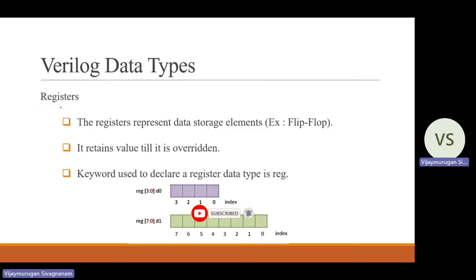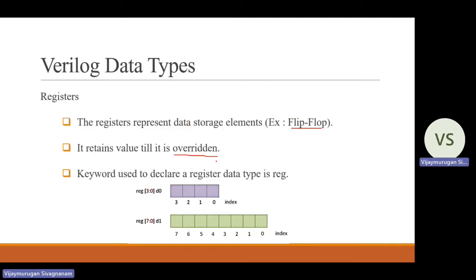Now we go to registers. What is a register? The general definition of register is just storing the data — it represents a data storage element. The example of a register is a flip-flop, which stores 1-bit data. If you need to store more than 1-bit data, you can combine multiple flip-flops. It retains the value until it is overridden — when a new value enters the flip-flop, the old value is overwritten. The keyword used to declare a register data type is reg. For example: reg [3:0] D0 — where D0 is the variable name carrying 4 bits of values: 0, 1, 2, 3.